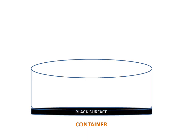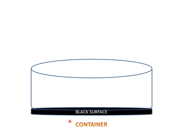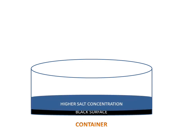We have a container which has a black surface and a layer of higher salt concentration. The water layer in this container has salt concentration varying from bottom to top. At the bottom surface there will be higher salt concentration, so the density of this water will be high.